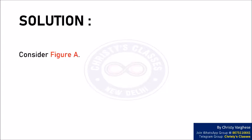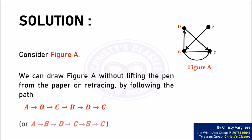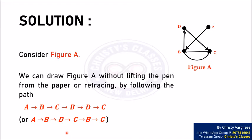Solution. Consider figure A. We can draw figure A without lifting the pen from the paper or retracing by following one of these two paths. Either A → B → C → B → D → C, or A → B → D → C → B → C.